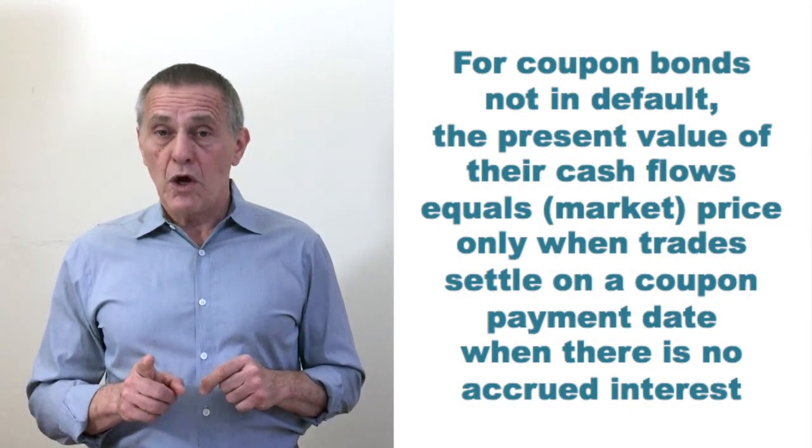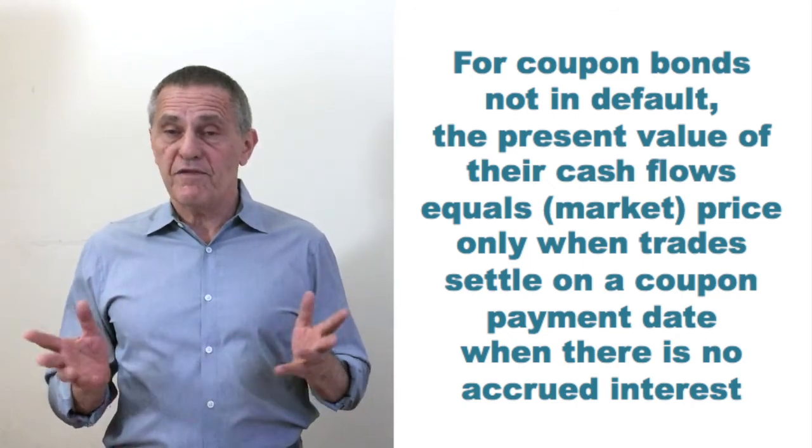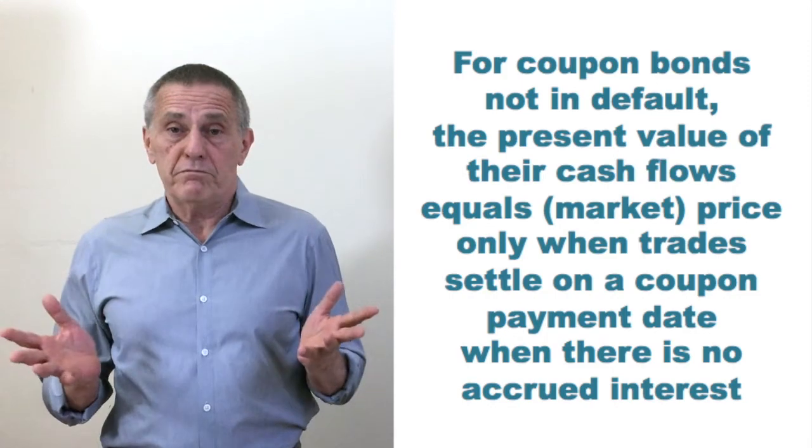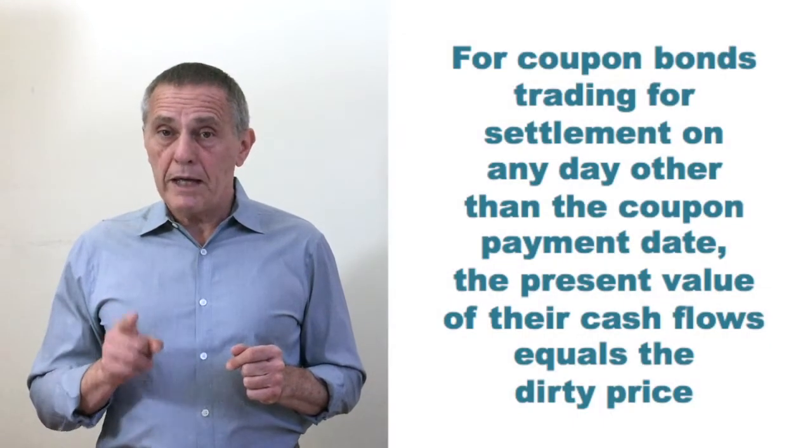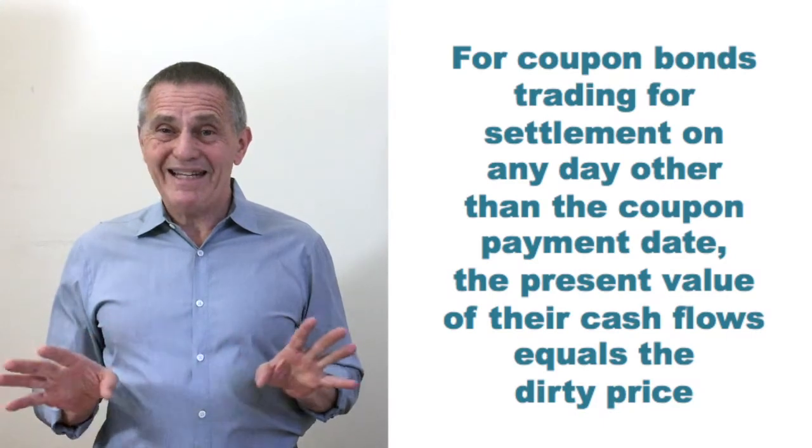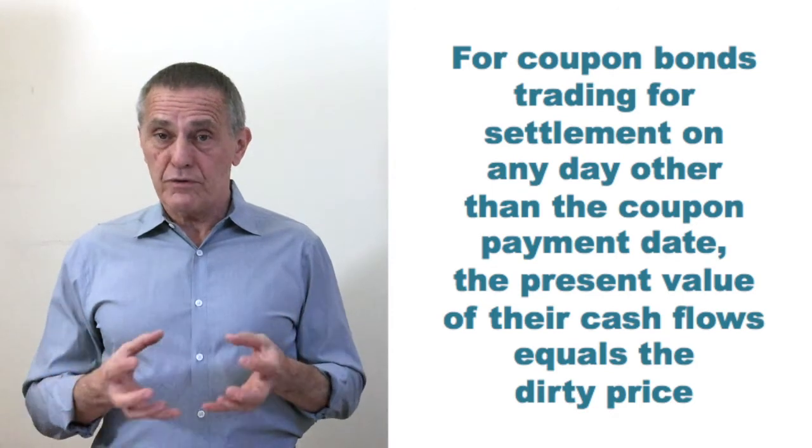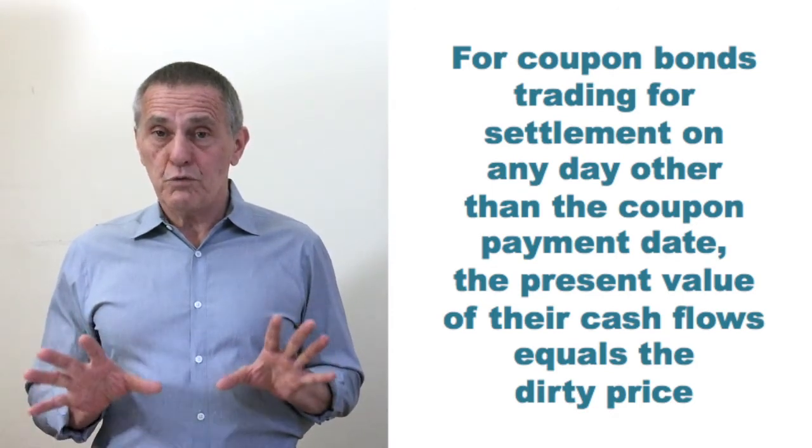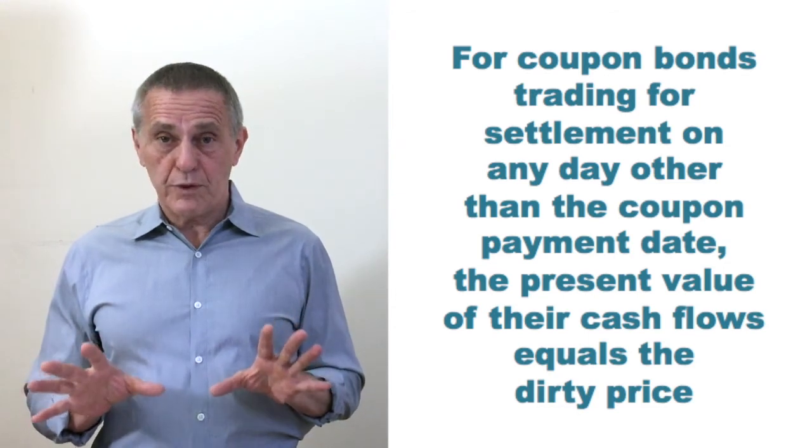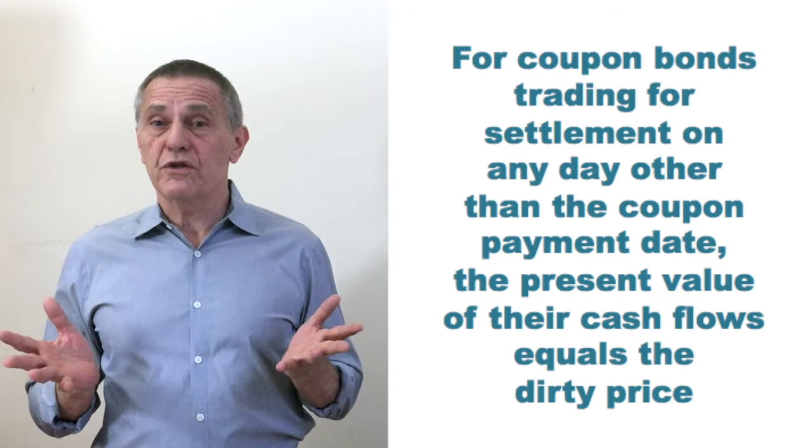But for coupon bonds, only when trades settle on the coupon payment date is the present value of all the cash flows synonymous with price. But for coupon bond trades settling any day between coupon payment dates, then the present value of all the cash flows includes the accrued interest. In other words, for coupon bonds trading for settlement between coupon payment dates, the present value of the cash flows is the dirty price.